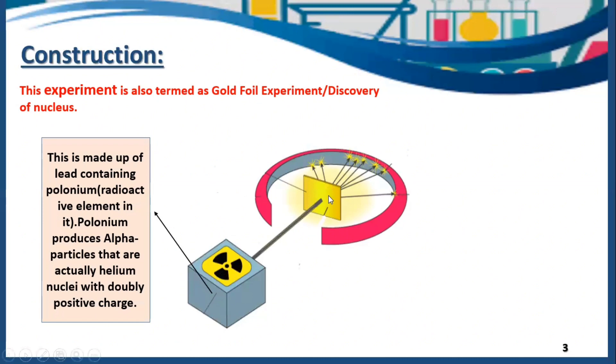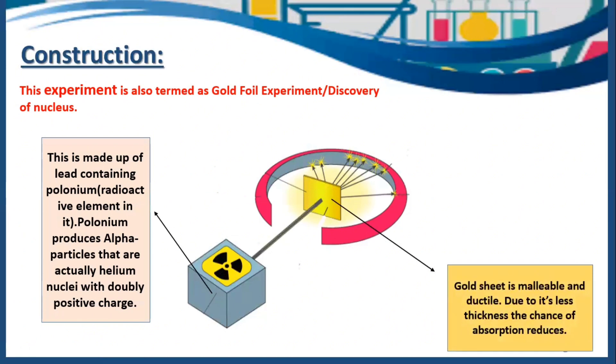Then comes this gold foil. This gold foil is very ductile and malleable and this is the main reason why Rutherford chose gold metal here. The thickness of this sheet is just 0.0004 centimeter. He chose this thin sheet because he didn't want alpha particles to be absorbed in the gold foil.